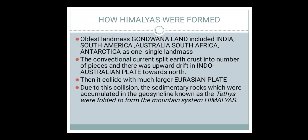The oldest land mass was Gondwana Land. It included India, South America, Australia, South Africa, and Antarctica — all in a single land mass. Beneath the earth there were convectional currents. Due to these currents, the earth's crust split into a number of pieces, and there was an uplift movement in the Indo-Australian plate towards the north.